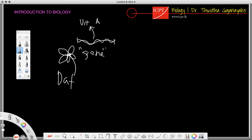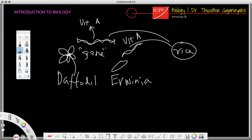So they take this daffodil and then another bacteria, Ervinia. And they take this gene from these two - they make the vitamin A and insert into the rice. Then the rice plant also makes vitamin A.